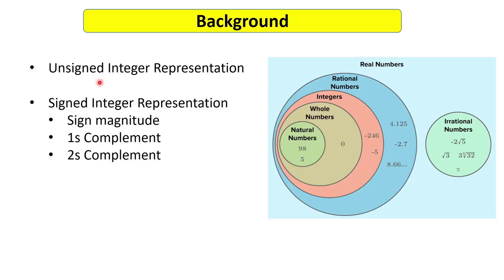Let's first discuss why we need fixed point representation. In the previous videos we have already discussed how we can represent unsigned integers and signed integers. For signed integers we talked about three different representations: signed magnitude, one's complement, and two's complement. Now we have integer numbers and also some fractional numbers like 4/3 or 3/4, which have a numerator and denominator, and numbers with a decimal part like 4.125 or -2.7.